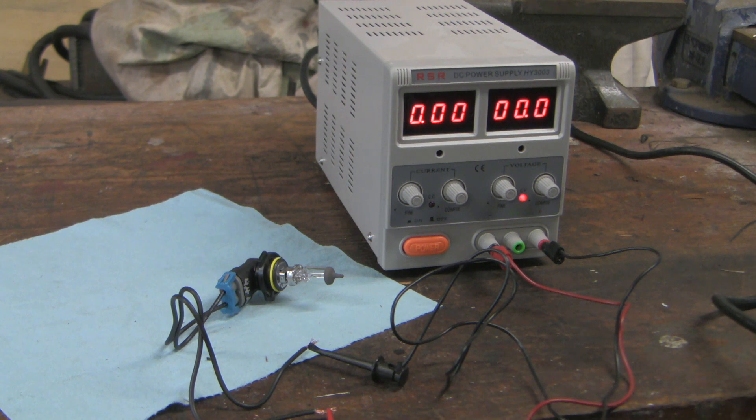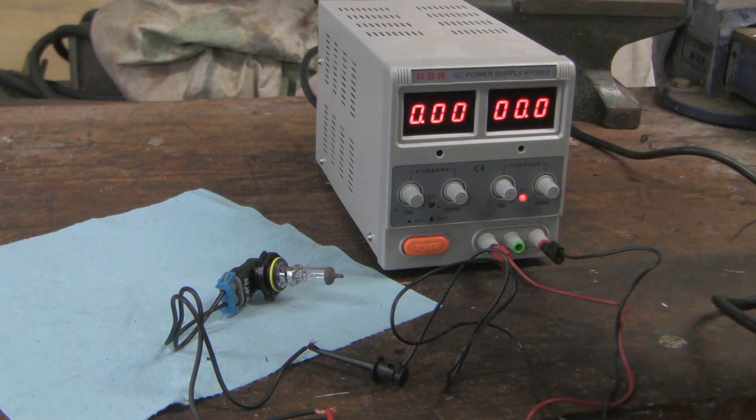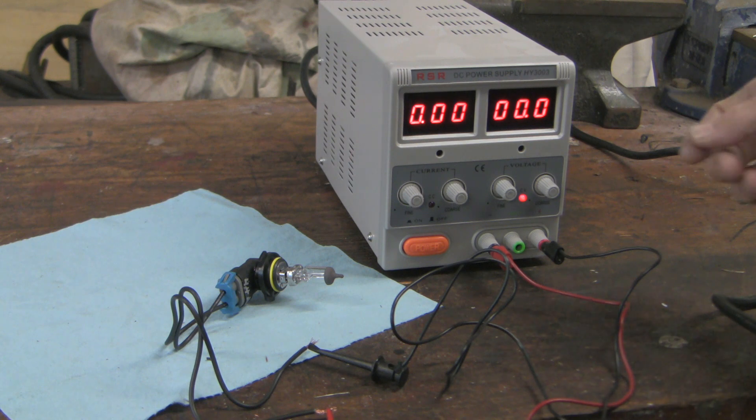Now I want to answer two questions here. The first question is how much voltage does it take to turn this light bulb on and secondly is there a gradual variation in brightness depending on how much voltage is applied. Let's see.